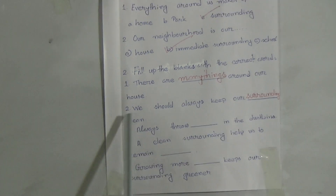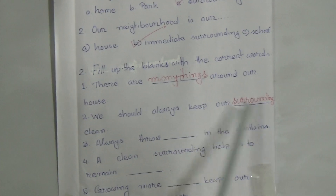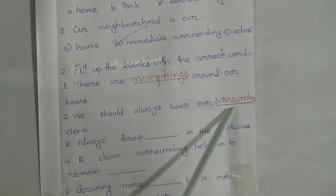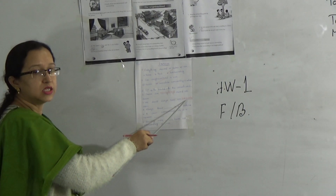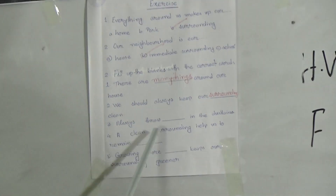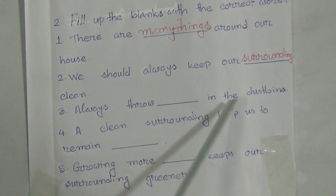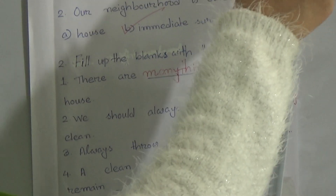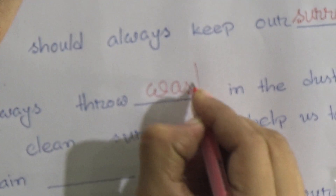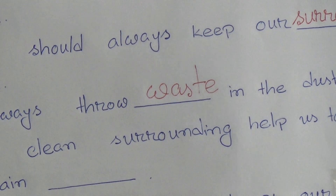We should always keep our surrounding clean. Surrounding spelling: S-U-R-R-O-U-N-D-I-N-G. Number three — 'Always throw dash in the dustbin.' The answer is 'waste' — W-A-S-T-E. Always throw waste in the dustbin.